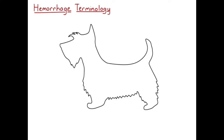This video is going to be on the terminology that we use to describe how and where a patient is hemorrhaging. Epistaxis is when animals are bleeding from their nose, hemoptysis is when they're coughing up blood, and hematemesis is when they're vomiting up blood.